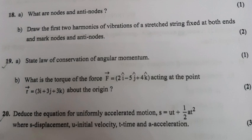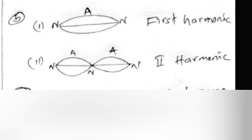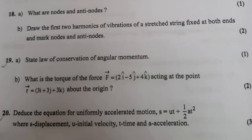Question 18a: What are nodes and antinodes? 18b: Draw the first two harmonics of vibration of a stretched string fixed at both ends and mark nodes and antinodes. Answer 18a: In a standing wave, the points with zero displacement are nodes and points with maximum displacement are antinodes. Answer 18b: First harmonic and second harmonic shown.